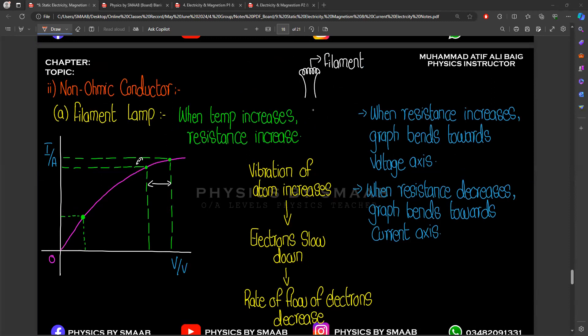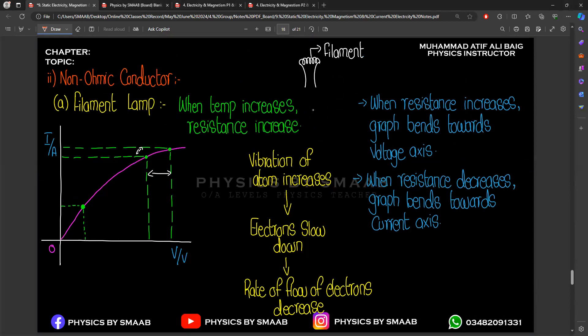For street lights, there are different sensors available — it is not compulsory to always use LDRs. But if we want to use LDRs on street lights, that's how they work based on light intensity — high intensity causes one reaction and low intensity causes another. There are multiple options available for automatic street lights; we only discussed how it works if LDRs are used.